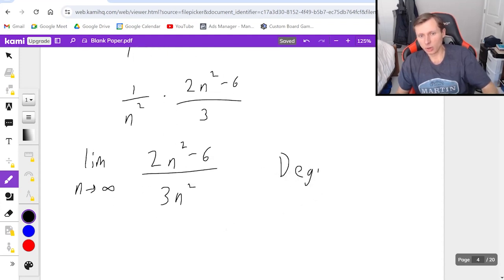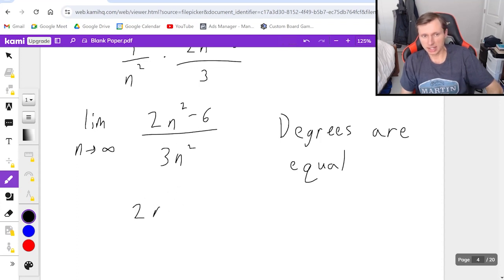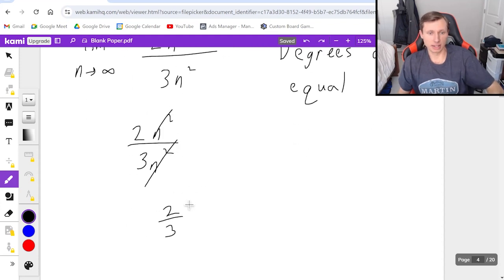Again, the degrees are equal. That's how you know if you're doing it right, by the way. The degrees should always be equal. If they are not equal, then it will not work. You'll get inconclusive. So then I just look at the leading terms again. It's 2n squared over 3n squared. The n squareds cancel, and we'll get a final answer of 2 thirds.